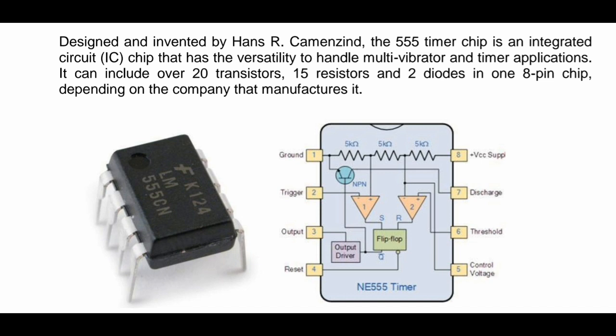Hello guys, today I am going to tell you about the 555 timer and its modes: astable mode, bistable mode, and monostable mode. This is the basic circuit diagram of the 555 timer. It consists of 20 transistors, 15 resistors, and 2 diodes involved in a single 8-pin chip, depending on the company that manufactures it.